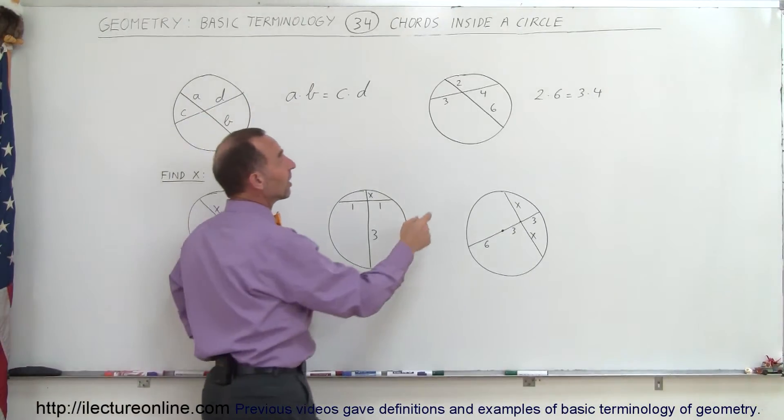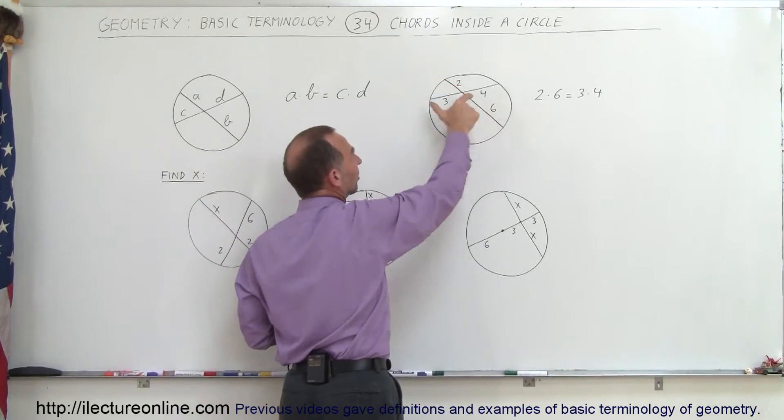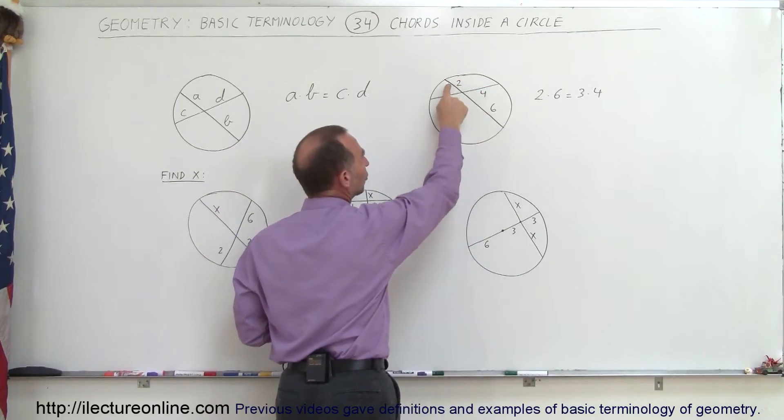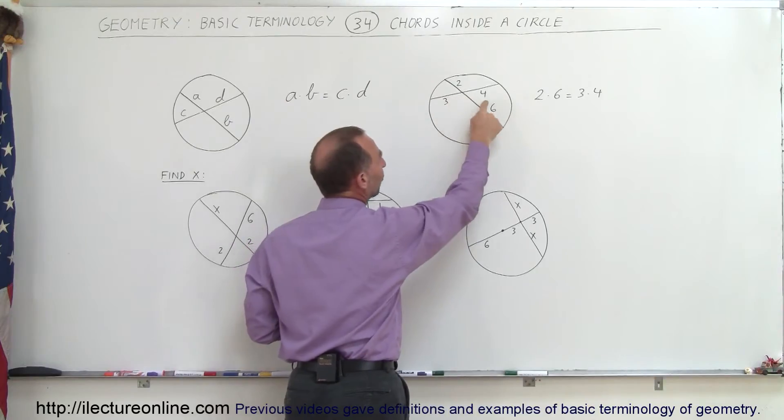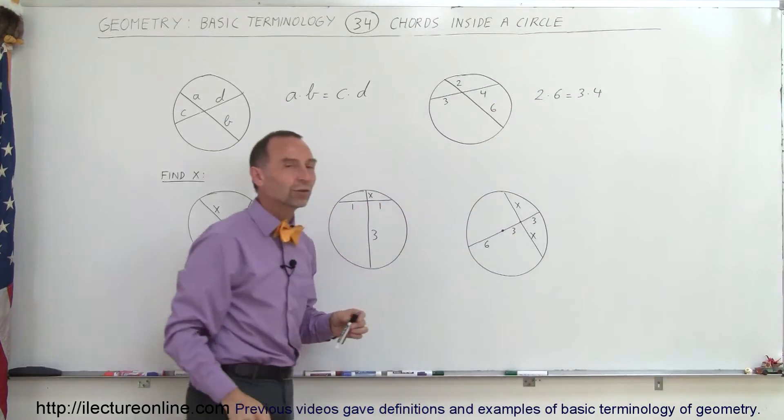As an example, let's say here that this length is 2, that length is 6, that length is 3 and that length is 4. We can say that 2 times 6 equals 3 times 4 which of course is the case, 12 equals 12.